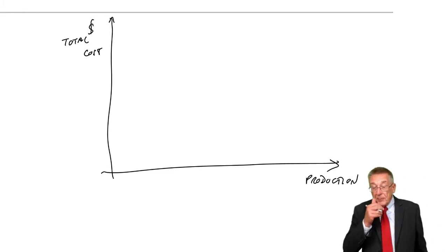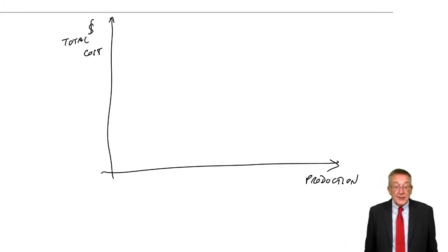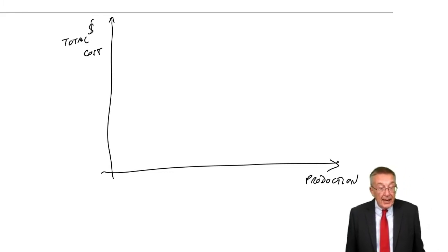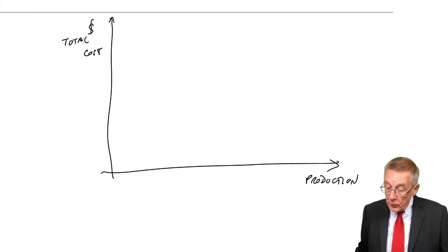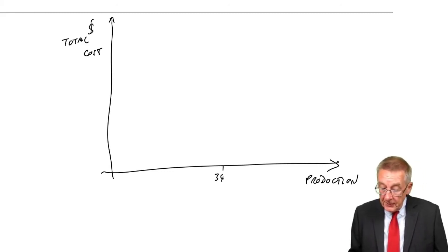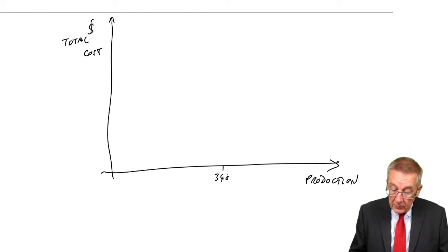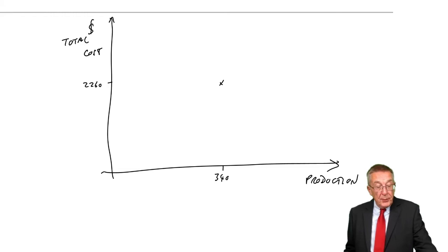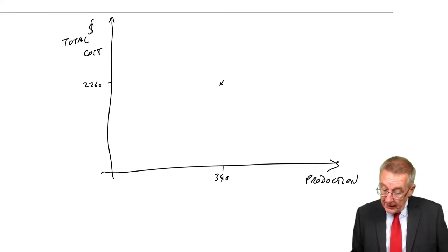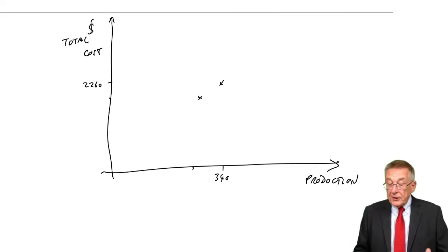Now, I'm not going to draw a perfect graph here by any means. And you wouldn't be asked to win the exam. But, you know, in January, you produced 340 units and the total cost was 2260. In February, you produced 300 units, which, let's say, about there. And the cost was 2160, let's say, about there. And so on. You could go plotting them all.